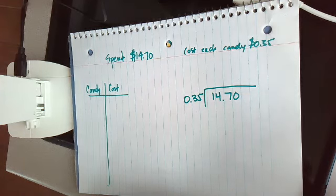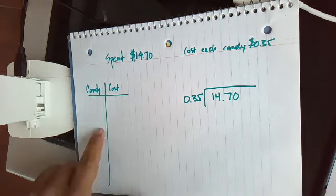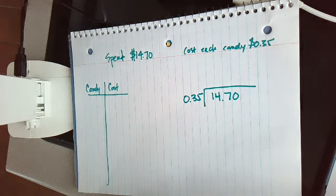Using the ratio table is a good idea when we have measurement division because we know the size of the group. We don't know the number of groups. So just remember that for measurement division, the ratio table is a great way because we know the size of the group or the size of the second factor.